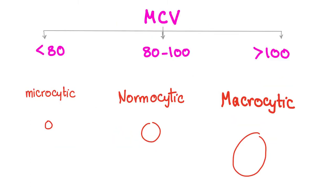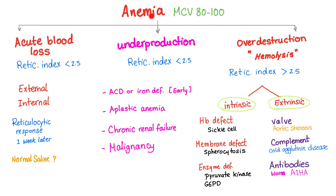Next step: is the anemia microcytic, normocytic, or macrocytic? We do the MCV, mean corpuscular volume. Less than 80 is microcytic, 80 to 100 is normocytic, more than 100 is macrocytic. We have finished talking about microcytic and macrocytic. We are still here — normocytic anemia. Cells are normal sized from 80 to 100. If you have anemia and the MCV is 80 to 100, this is normocytic anemia.